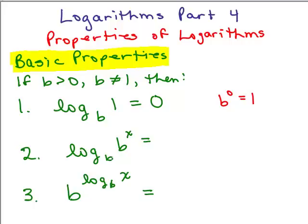Log of b to the x base b. So here's the question. b to the what power equals b to the x? So basically, I'm saying b to some power is equal to b to the x. What's that going to be in that little circle here for the exponent? x. Make sense? b to the x is going to equal b to the x.